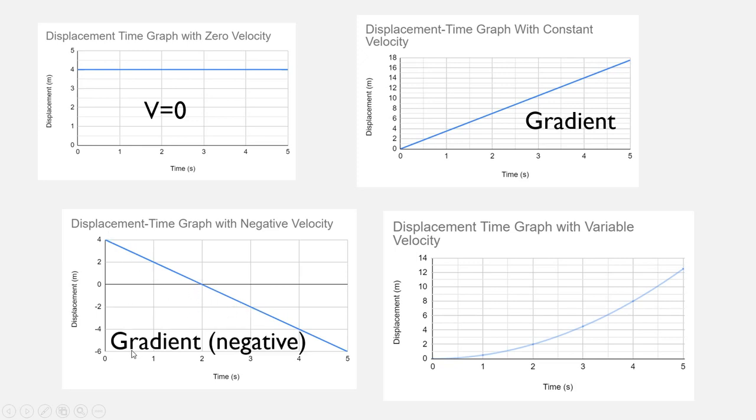And in this case, you're going to do the gradient, but you're going to find a negative gradient. So when it's sloping downward, it's a negative gradient. And when it's sloping upward, it's going to give you a positive gradient.